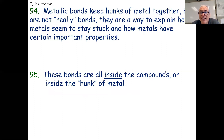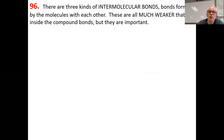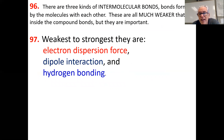What we're about to talk about are called intermolecular bonds — between particles that are not stuck together. There are three kinds: weak, weak, and weaker. Weakest to strongest: electron dispersion force, then dipole interaction (two poles — positive and negative), and then hydrogen bonding. So there are three kinds of intermolecular attraction.